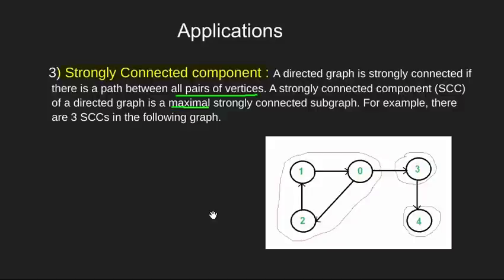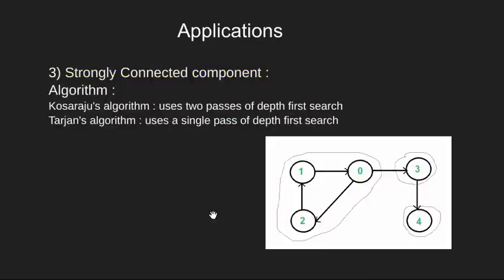This strongly connected component can be found through two famous algorithms. The first is Kosaraju's algorithm where we run depth first twice. And the other is Tarjan's where we can get SCC in a single pass.